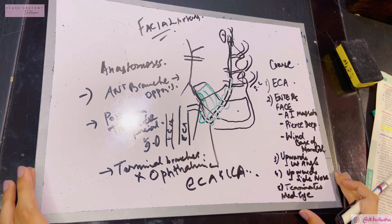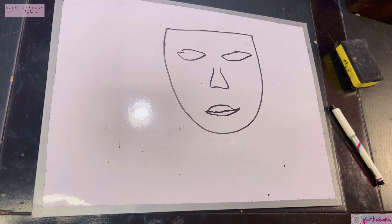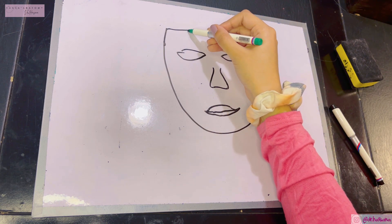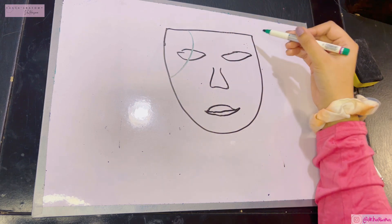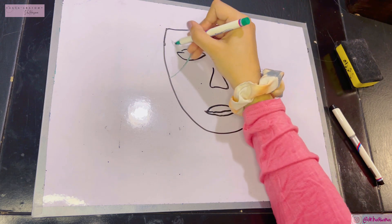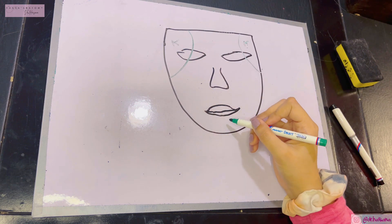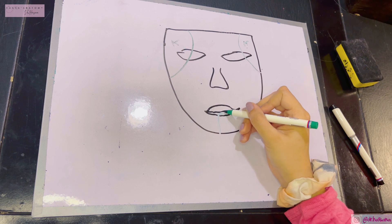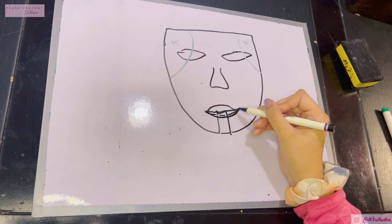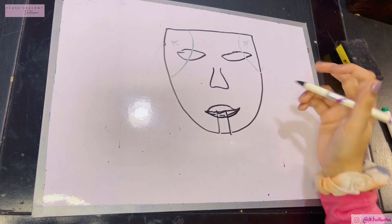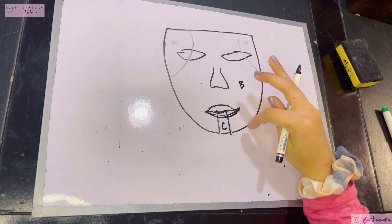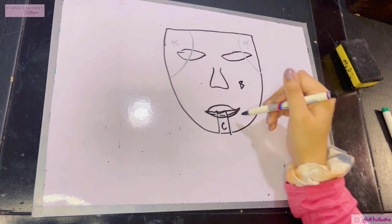Now let's talk about the lymphatic drainage of the face. To learn this, draw a face and draw two curtains falling on the sides — one on each side. Label the area under the curtains as A, the upper territory. Then draw a small box from the chin up to the lower lip and label it C. The remaining middle area is B. These three territories — A, B, and C — represent the upper, middle, and lower territories of the face.